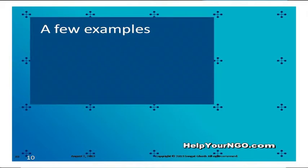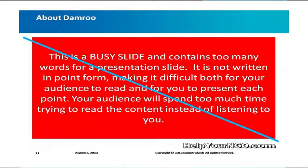Let's look at a few examples. This is Damru. I don't know if Damru will exist in the NGO world, but if he did, and if you were to talk about Damru like this — how bad is it? You've written a whole sentence running into states and states and states. Can you break it down? No one has time. This is a busy slide.